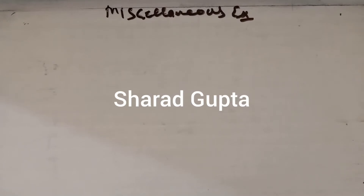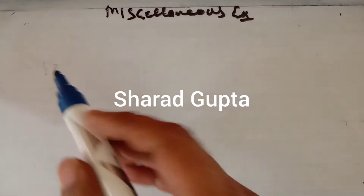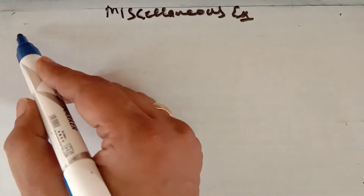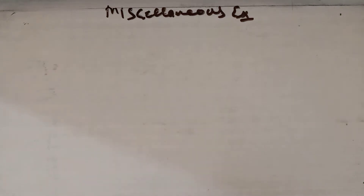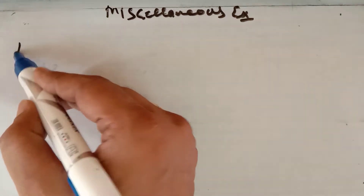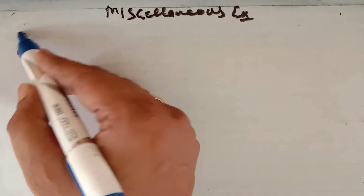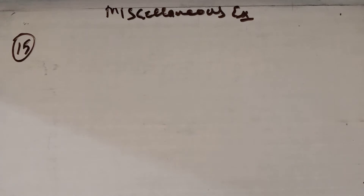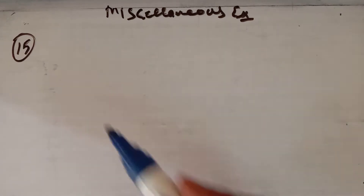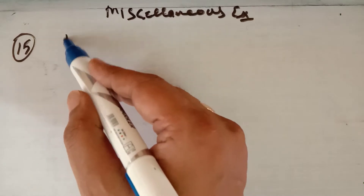Hello, this is lecture number 14 for the chapter Sequences and Series, and we are discussing the miscellaneous exercise. In the last lecture we covered up to question number 14. So let us take question number 15, in which it is given that the pth, qth, and rth terms of an AP are a, b, c respectively.